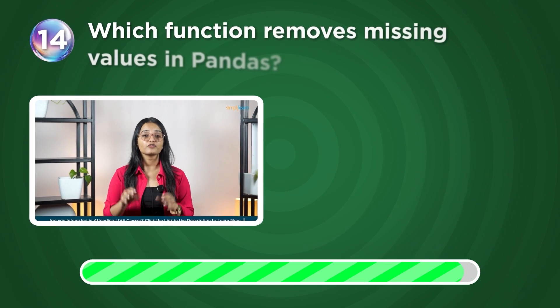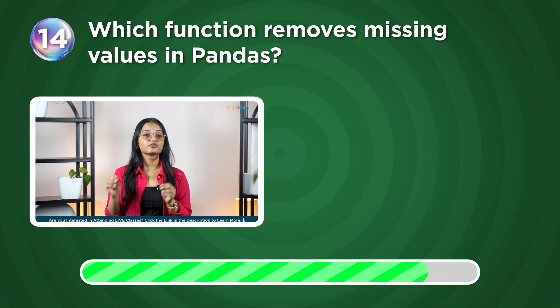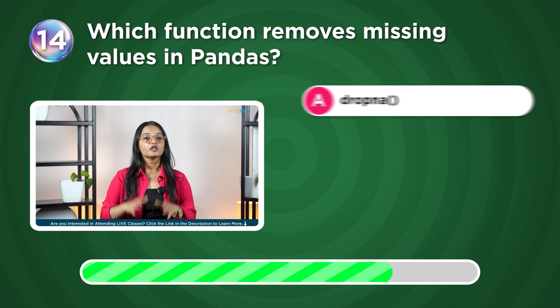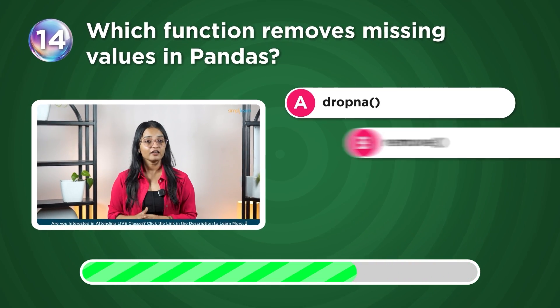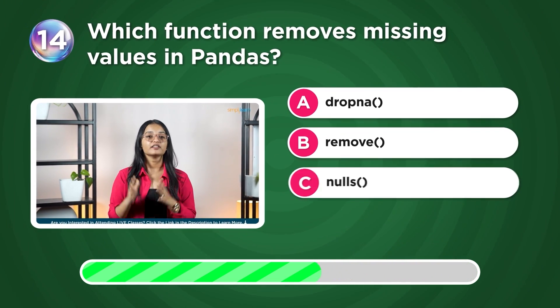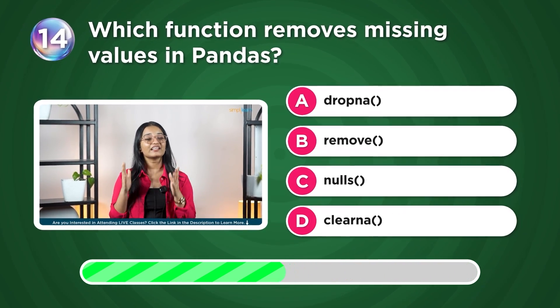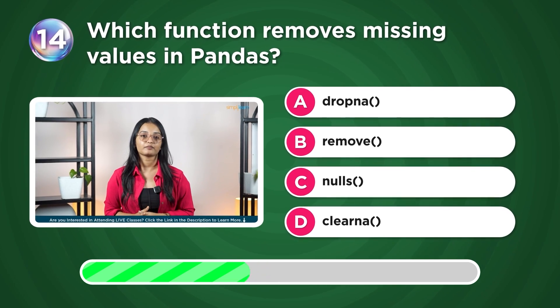Which function removes missing values in pandas? Drop any, remove, nulls, or clear any?